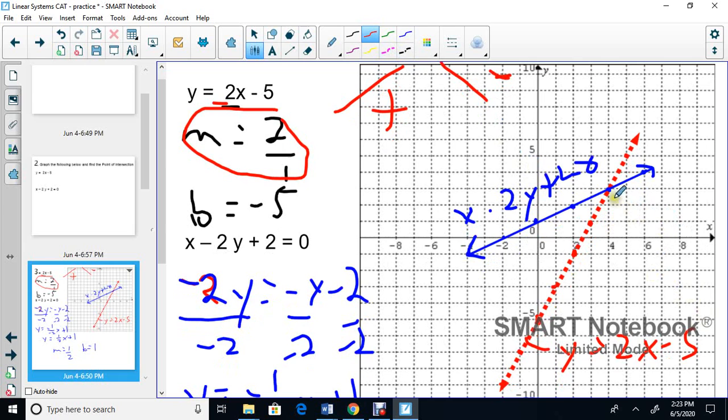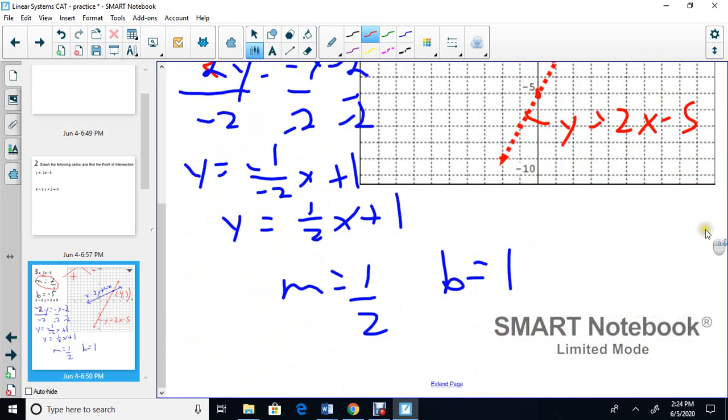So my point of intersection, or POI, is right here. So it's this point right here. It's 1, 4, 1, 2, 3. 4, 3. 4, 3. So my POI here, my point of intersection, POI is 4, 3.